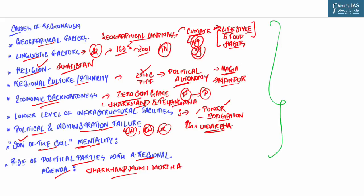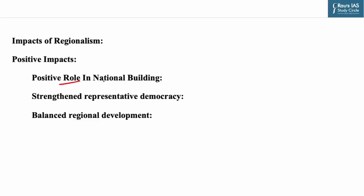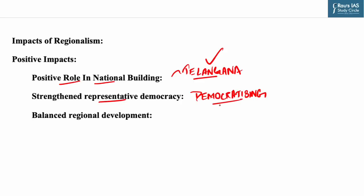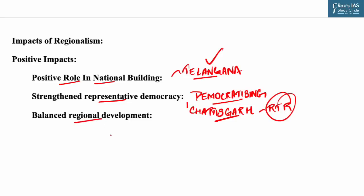Now let us understand the important impacts of regionalism. Under positive impacts, first is its positive role in nation-building. If the demands of a region are accommodated by the political system, people of that region feel empowered and closer to the larger nation — for example, after Telangana was created, the protest for a separate state stopped. Second positive impact is its trend in representative democracy — regionalism has a democratizing effect, helping people feel more involved in local and regional governance. For example, after the creation of Chhattisgarh, direct democracy tools like the right to recall were employed at the local level. Third is balanced regional development by raising voices and working together towards the upliftment of their region — as was the case for Jharkhand and Chhattisgarh.